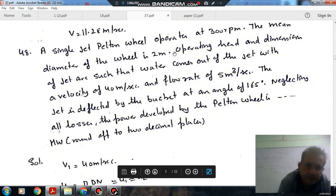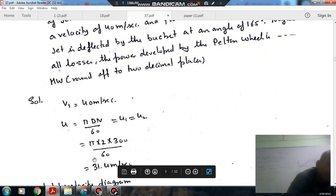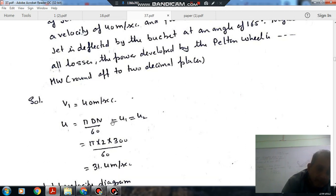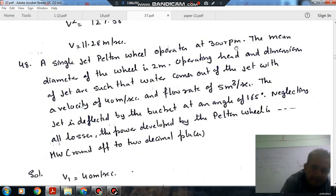Next, a single jet Pelton wheel operates at 300 rpm. The mean diameter of the wheel is 2 meters. The operating head and dimension of the jet are such that the water comes out of the jet with a velocity of 40 m/s and flow rate is given. The jet is deflected by the bucket at an angle of 165 degrees. Neglecting all the losses, the power delivered to the Pelton wheel is dash megawatt, round off to 2 decimals.